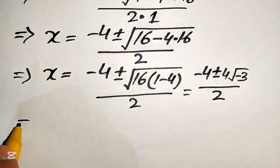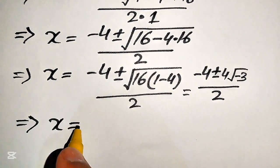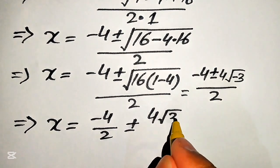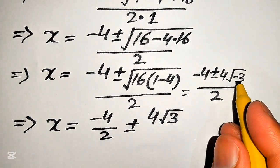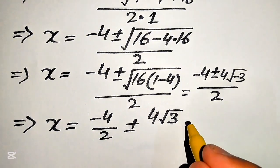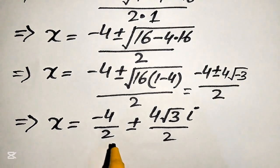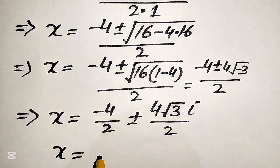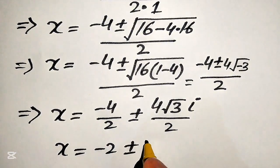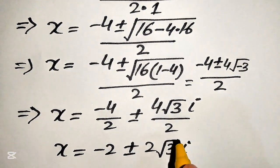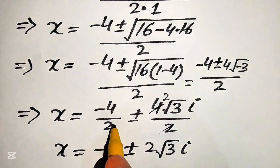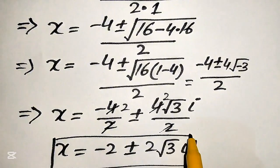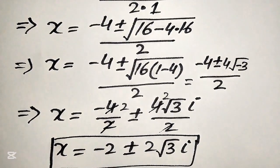Breaking this fraction, x equals minus 4 over 2 plus minus 4 times square root of 3 iota, divided by 2. Since a negative sign appears inside the square root, it becomes iota. This gives x equals minus 2 plus minus 2 times square root of 3 iota. These are the other two complex roots from equation number 1.